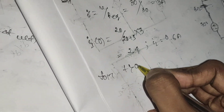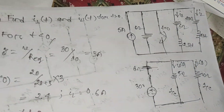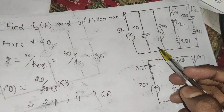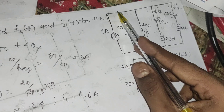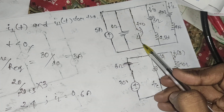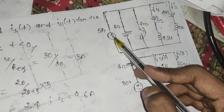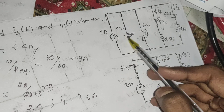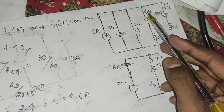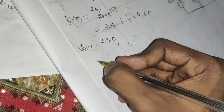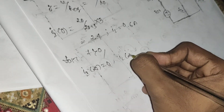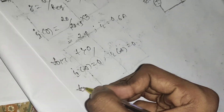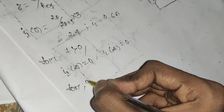For t greater than 0, the switch is closed. With the switch closed, the whole current passes through that branch and returns to the terminal, so there is no current flow through the 6 ohm resistor and no current through i1 or i2. Therefore i1(∞) = 0 and i2(∞) = 0.